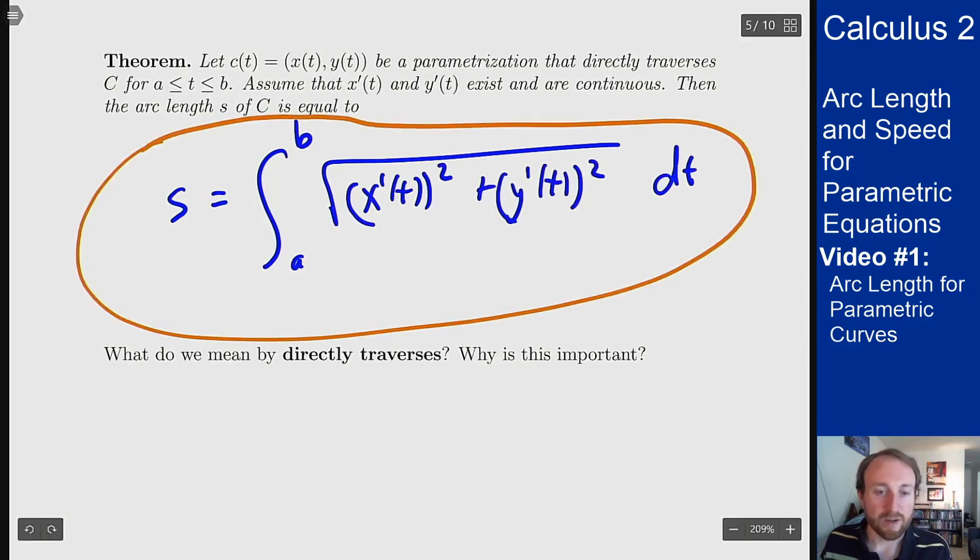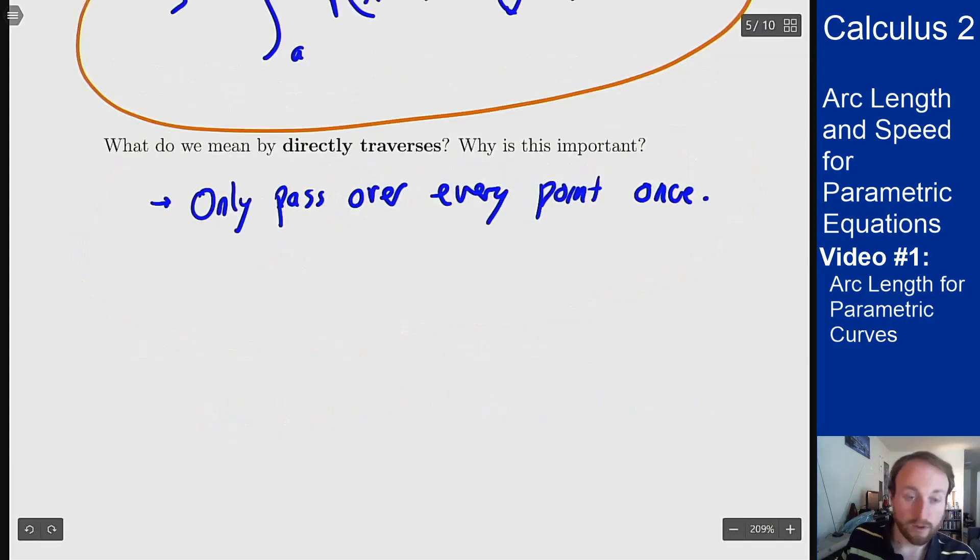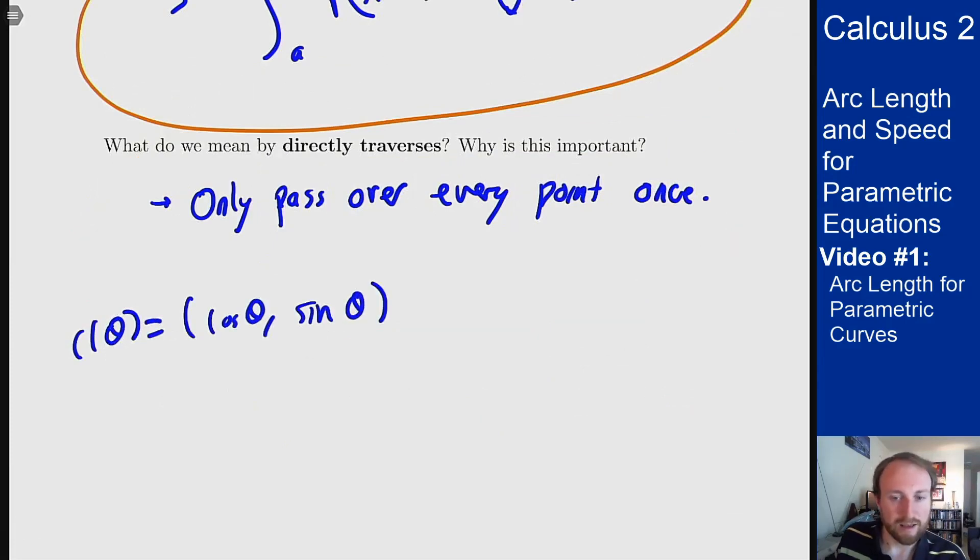Now what do we mean by directly traverses? Well the important thing here is that I don't want to have a dumb way of parametrizing my curve. I only want to pass over every point once in order to find the actual arc length. So you can think of something like a circle here. So if I look at the curve c of θ is cosine θ, sine θ, this traces out a circle.